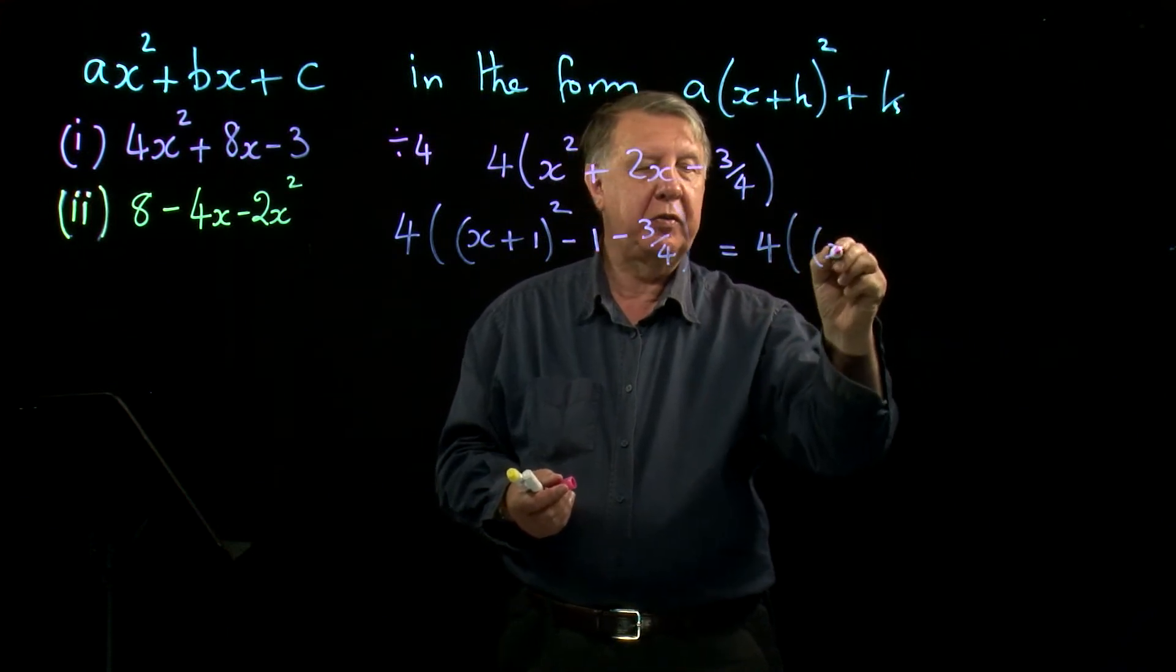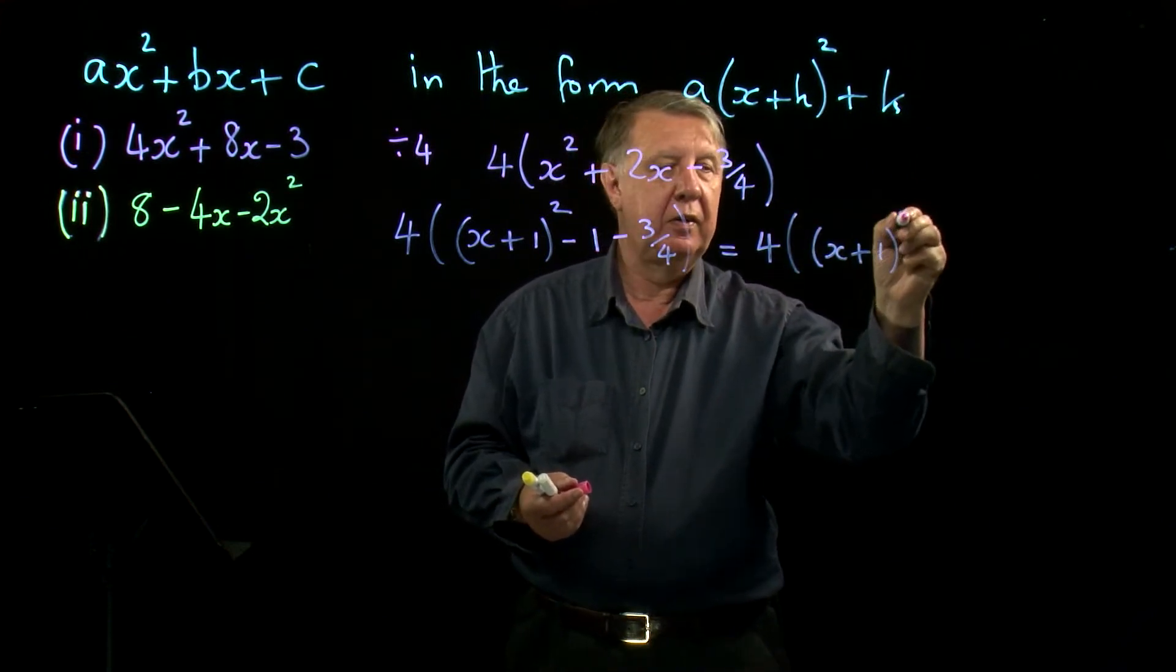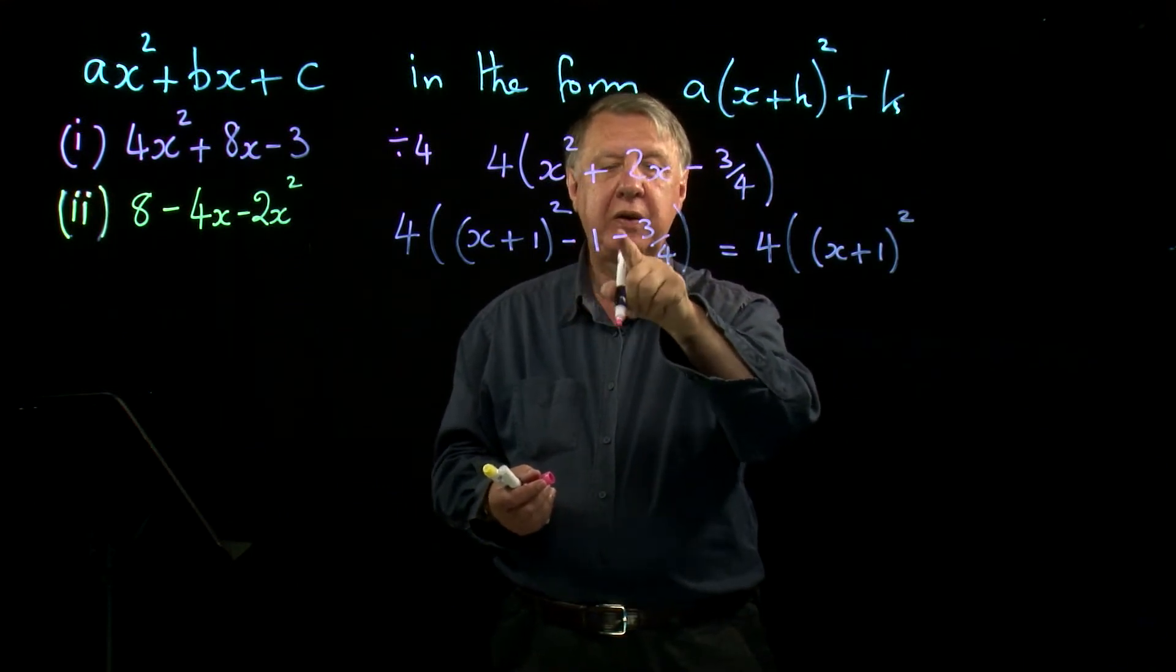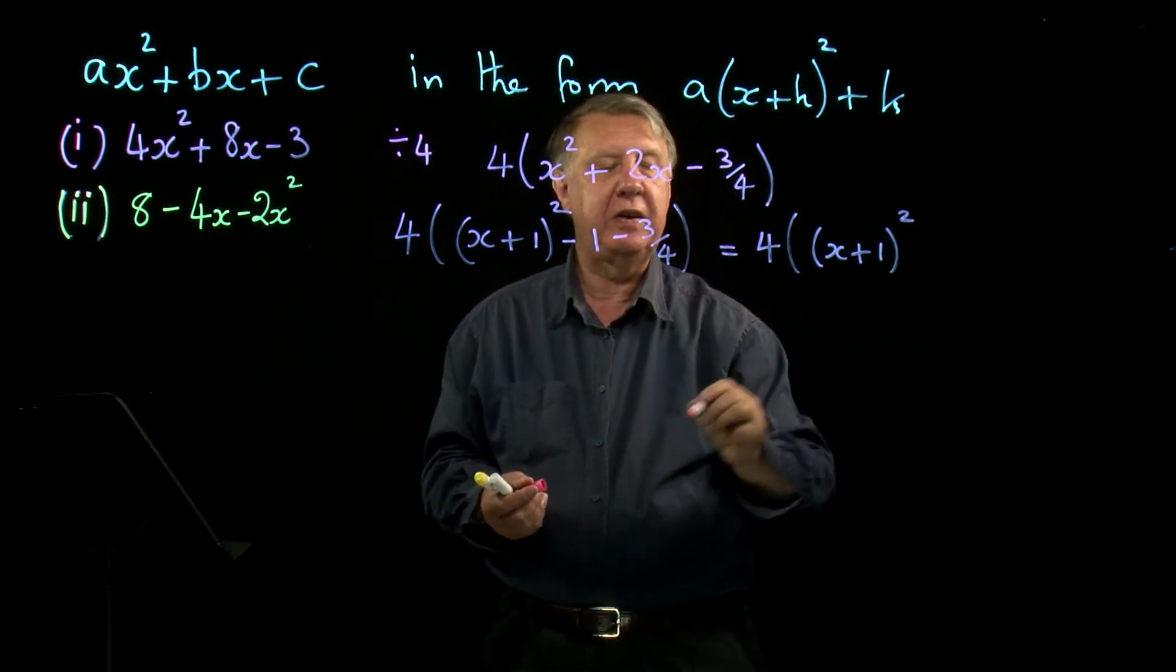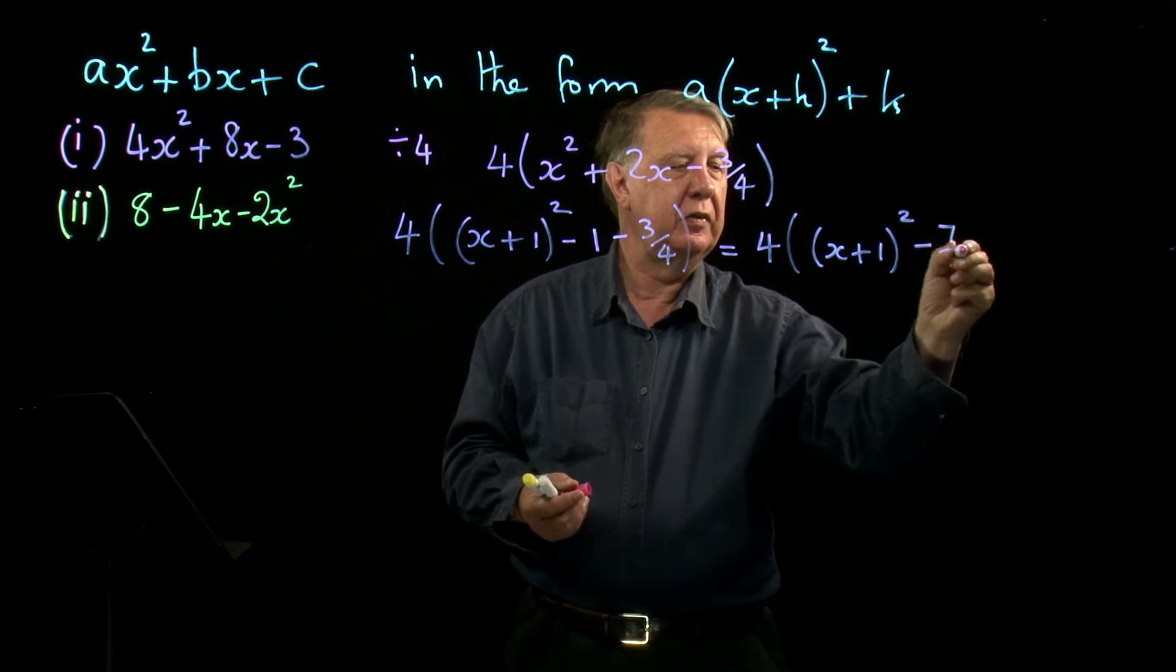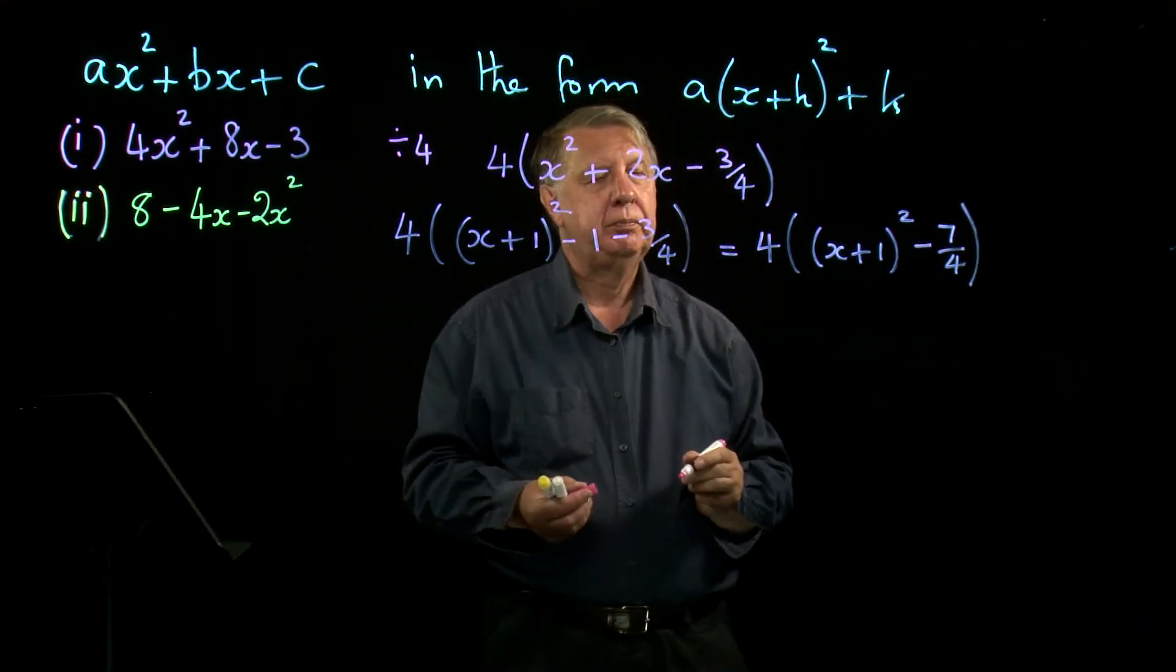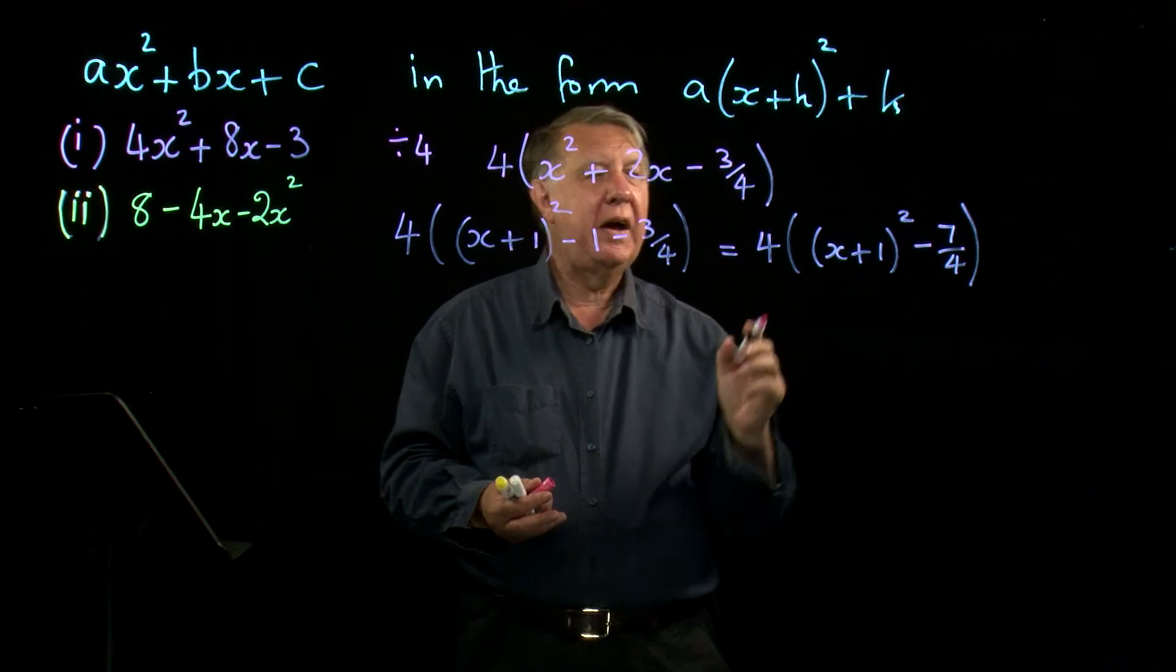Now we do some simplifying. Keep brushing up your fractions - negative one take away three quarters is negative seven over four.